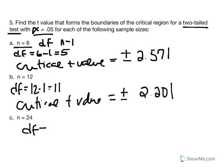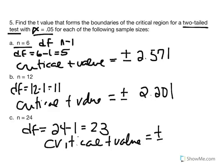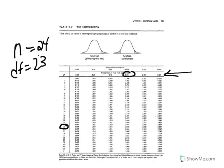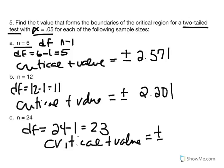For n equal to 24: degrees of freedom equal 24 minus 1, which is 23. We enter the table at df = 23, use the two-tailed tier at 5% alpha, and find that they intersect at positive/negative 2.069. So our critical t equals 2.069.